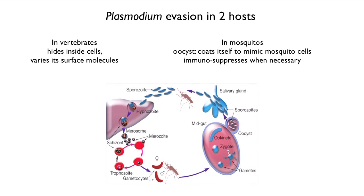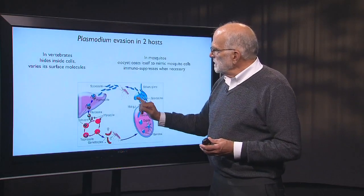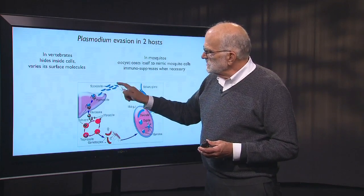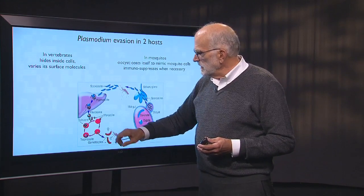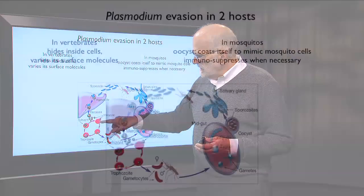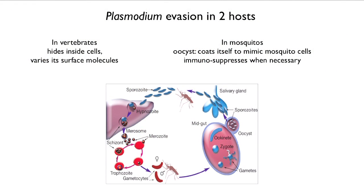This is the complex malarial life cycle. The human host is on one side and the mosquito host is on the other. When the mosquito bites, a sporozoite goes into the liver where it hides. When it then produces the schizontes that infect blood cells, it lives inside the blood cell. When it goes back into the mosquito, it is inside the mid-gut or forming sporozoites that go into the salivary gland, where it coats itself to mimic mosquito cells.